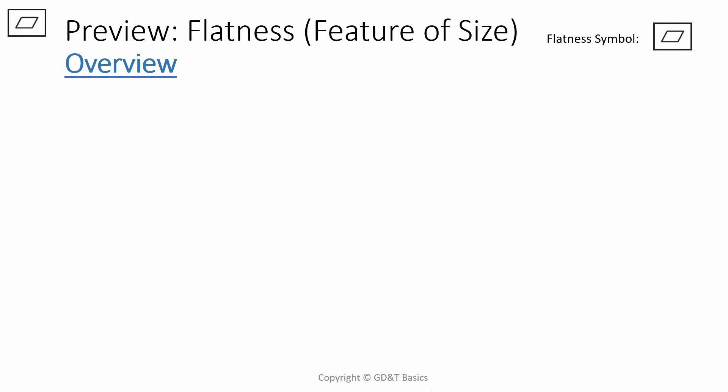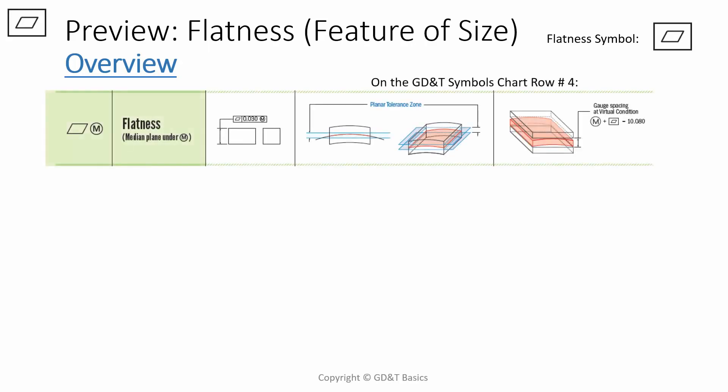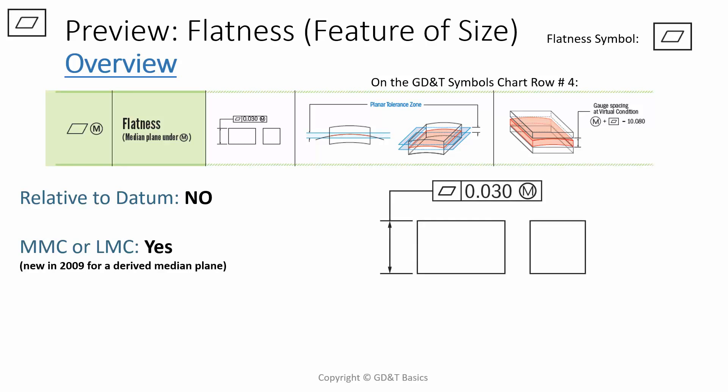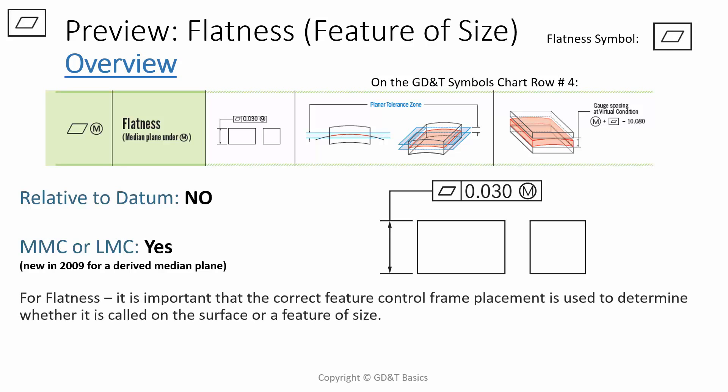We mentioned that there is another form of flatness, otherwise known as flatness of a feature of size, or derived median plane flatness. This version of flatness can be found on your GD&T symbols chart at row number four. Flatness is still not relative to a datum; however, when you apply it to a feature of size, you now can use the MMC or LMC modifier. This is flatness applied to a feature of size. You can notice that the flatness callout is now pointing to the size dimension. We will discuss flatness as it applies to a feature of size in another video, as well as discuss how to use the max material condition modifier with it.